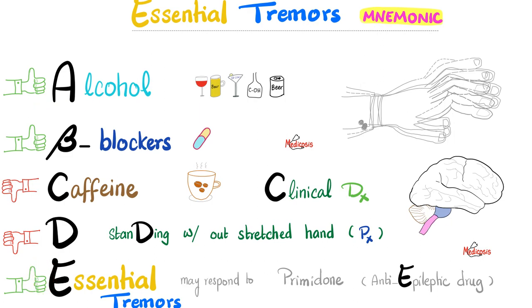First thumbs up: alcohol can improve essential tremors. Second thumbs up: beta blockers like propranolol can improve essential tremors.